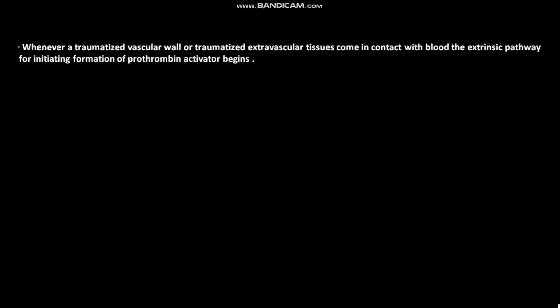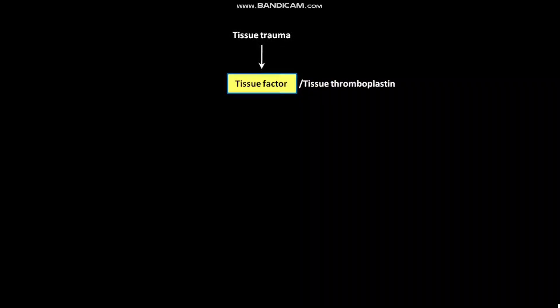Whenever a traumatized vascular wall or traumatized extravascular tissues come in contact with blood, the extrinsic pathway for initiating formation of prothrombin activator begins. Tissue trauma releases a complex of several factors called tissue factor or tissue thromboplastin.